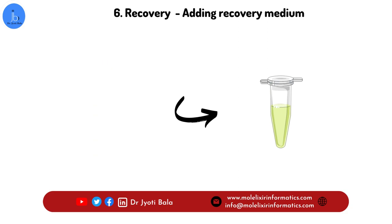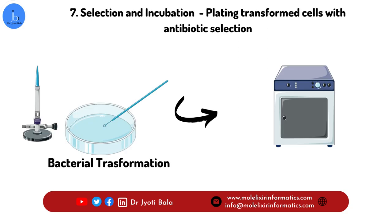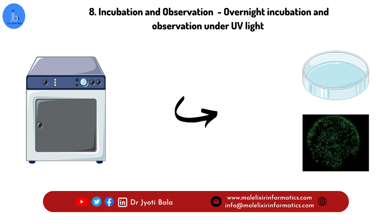After that, selection and incubation is required. Plate the transformed cells onto petri dishes containing growth media, supplemented with the antibiotic that selects for cells carrying the GFP gene. Finally, incubate the plate overnight and observe the growth of bacterial colonies the next morning. The transformed cells will exhibit a green fluorescent glow under UV light due to the expression of the GFP gene.